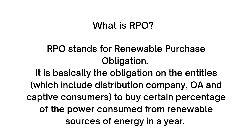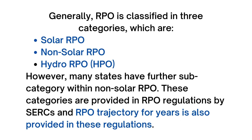In case of the distribution companies, RPO are usually determined on the basis of the total power consumption, excluding the power procured from large hydropower plants. Generally, RPO is classified in three categories, which are solar RPO, non-solar RPO and hydro RPO. However, many states have further subcategories within non-solar RPO. These categories are provided in RPO regulations by state commissions, and an RPO trajectory for years is also provided in these regulations.